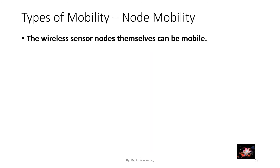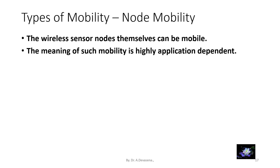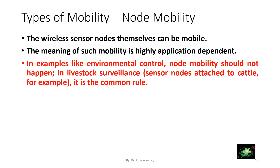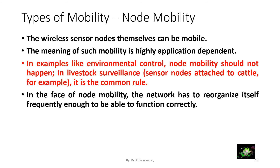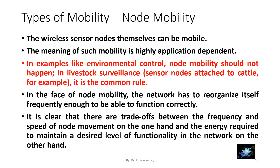Node mobility: the wireless sensor nodes themselves can be mobile, and the meaning of such mobility is highly application-dependent. In examples like environmental control, node mobility should not happen, whereas in livestock surveillance — that is, sensor nodes attached to cattle — it is the common rule. In the face of node mobility, the network has to reorganize itself frequently enough to function correctly. There are trade-offs between the frequency and speed of node movement and the energy required to maintain a desired level of functionality.